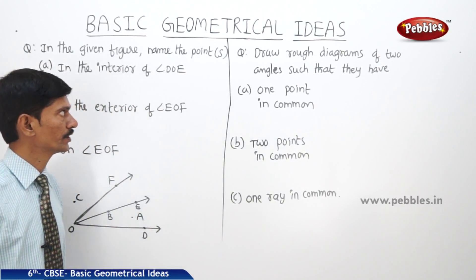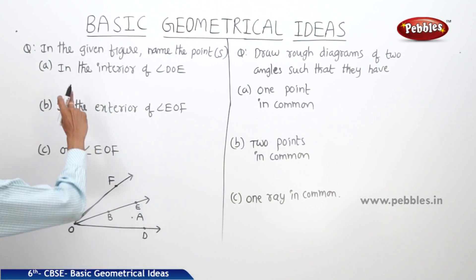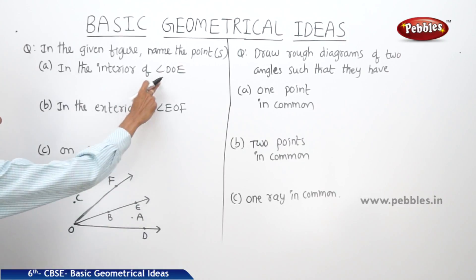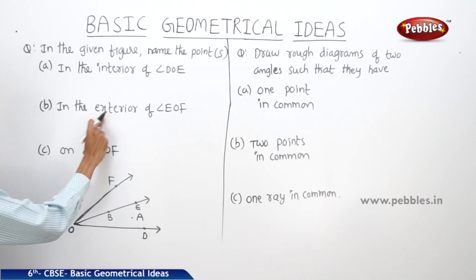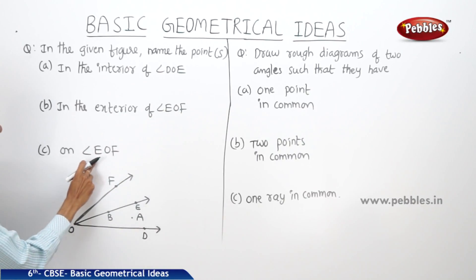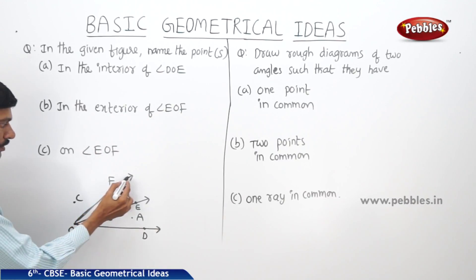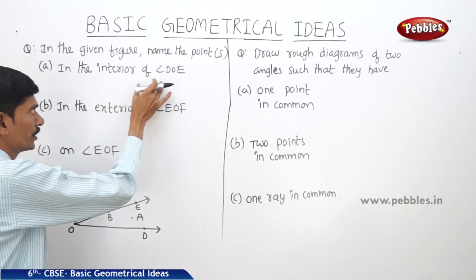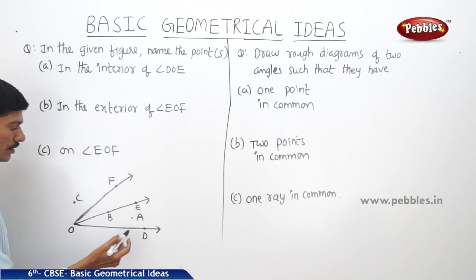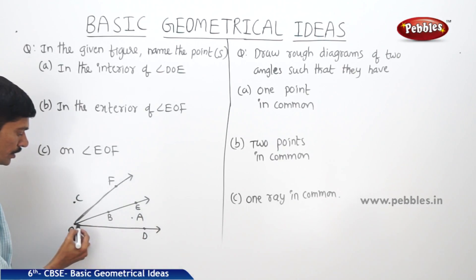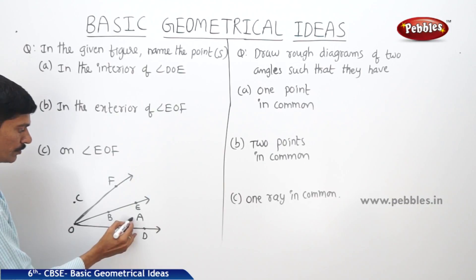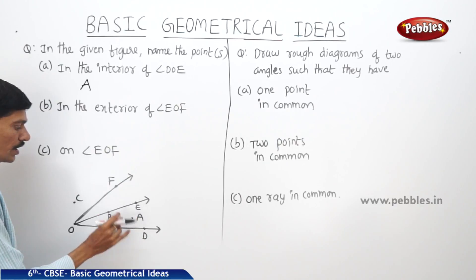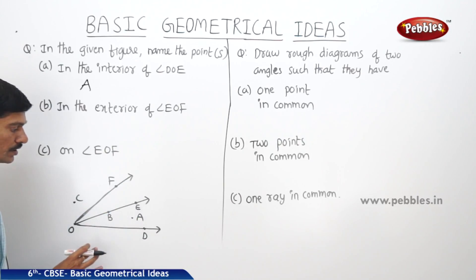Now let us solve few problems based on the angle. In the given figure, name the points in the interior of angle DOE, in the exterior of angle EOF, and on angle EOF. If you see the figure, we have to find the points in the interior of angle DOE. In the interior of angle DOE, there is only one point, that is A. This is the point inside angle DOE, meaning in the interior.